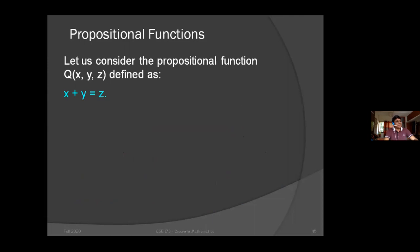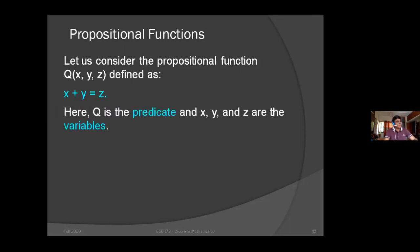Consider the propositional function Q(x, y, z): x plus y equals z. We call this the truth value. If we assign values to x, y, and z, we can evaluate the predicate. So what is the truth value of Q(2, 3, 5)?